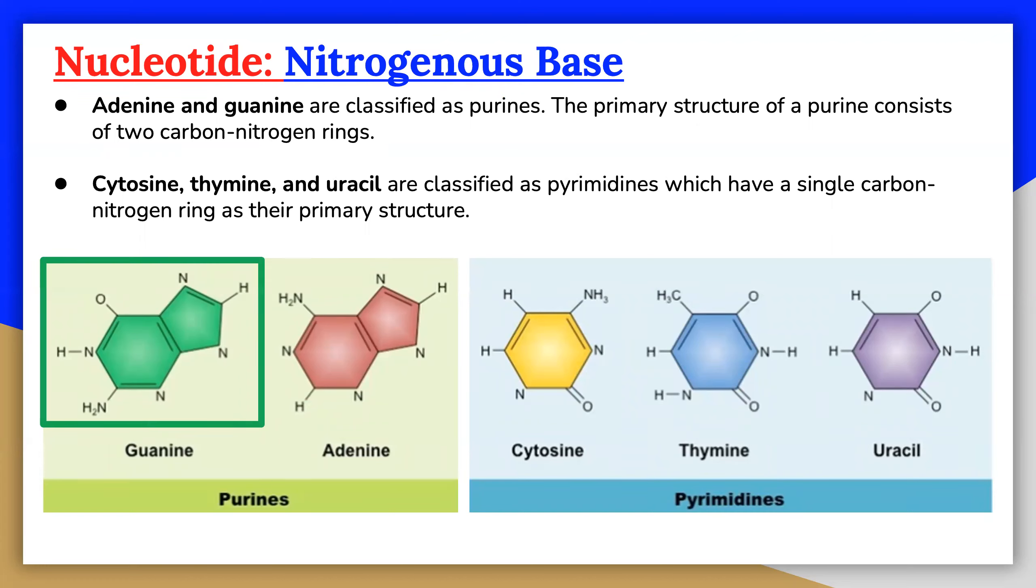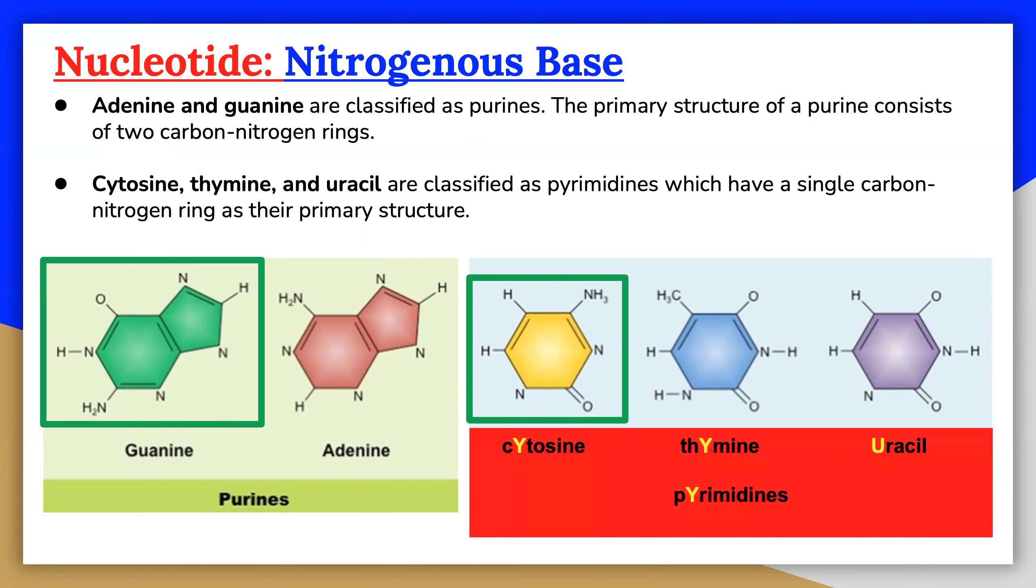Cytosine, thymine, and uracil are classified as pyrimidines that have a single carbon nitrogen ring as their primary structure. The easiest way to remember purines and pyrimidines without mixing them up is to remember: pyrimidines, cytosine, and thymine all have the letter Y in them. Also, uracil sounds like there is Y in it.